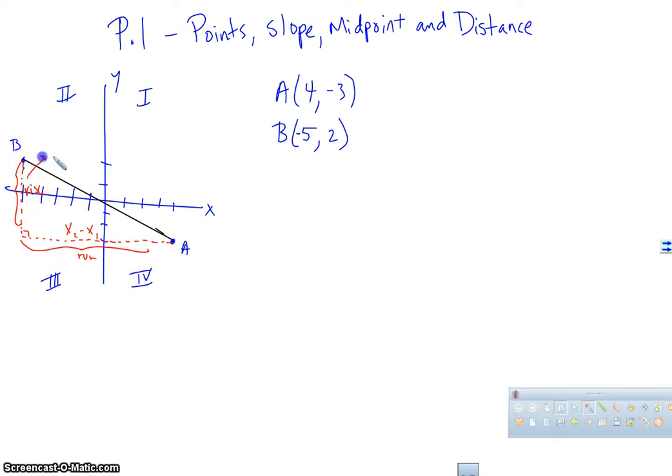And the rise can be found by taking the difference of the y-coordinates. So a lot of times we see the slope, slope is M, as the rise over the run, or delta y over delta x. Or if we're going to use a formula, y2 minus y1 over x2 minus x1.